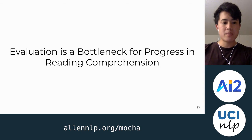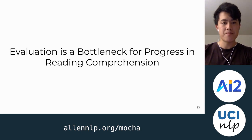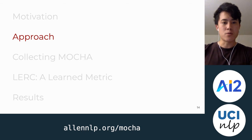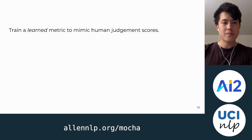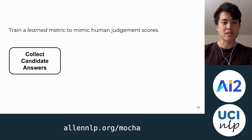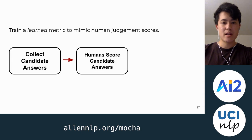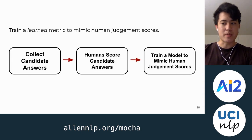Evaluation is a bottleneck for progress right now in reading comprehension because we should be moving in this generative reading comprehension direction. Our approach to address this evaluation bottleneck is to train a learned metric to mimic human judgment scores instead of trying to engineer a metric. The pipeline for doing this is to first collect candidate answers, have humans score these answers, and then finally train a model to mimic these scores.